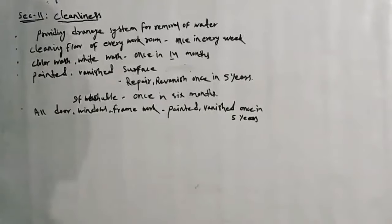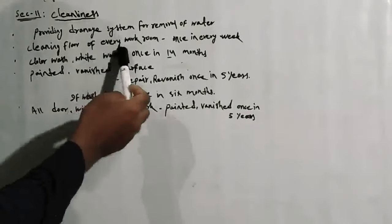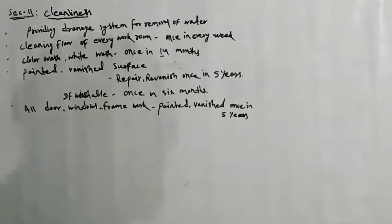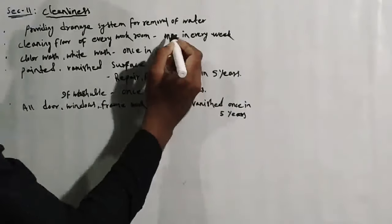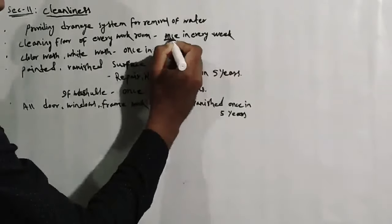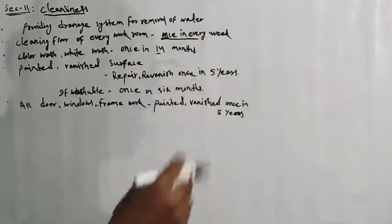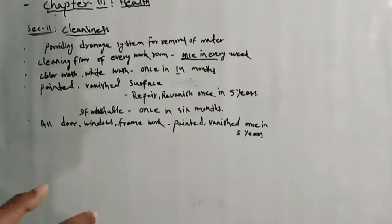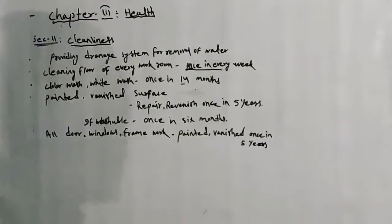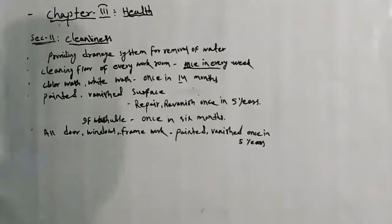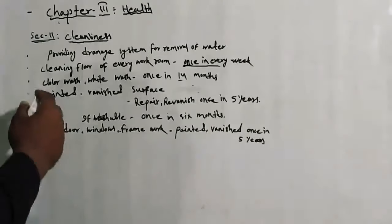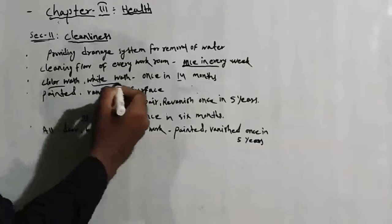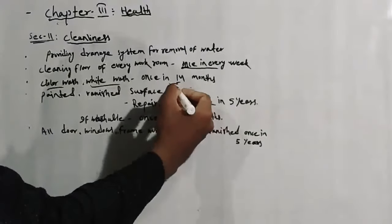Dusra point hai, cleaning the floor of every work room once in every week. Har week mein ek baar jo work room hai — jahan pe kaam hota hai — usko saaf karna chahiye. Uske baad, color wash or white wash once in 14 months.